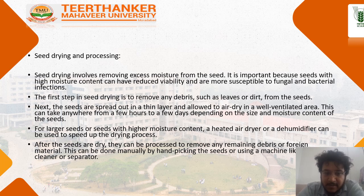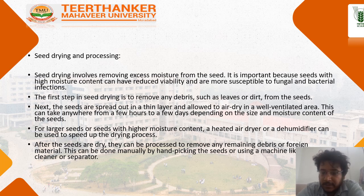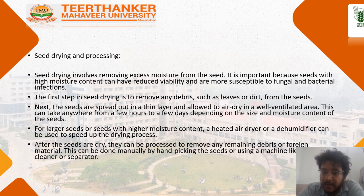The first step in seed drying is to remove any debris such as leaves or chaff from the seed so that it is good for testing and has more market acceptability. Next, the seeds are spread out in a thin layer and allowed to air dry in a well-ventilated area so that the moisture is removed.